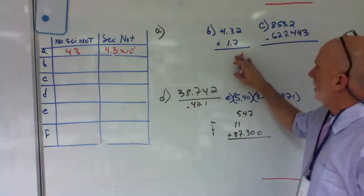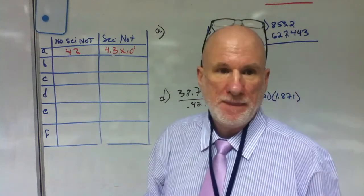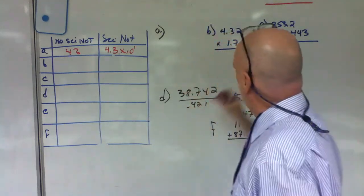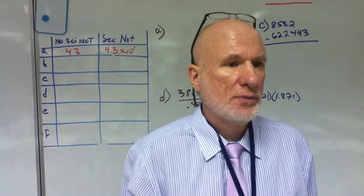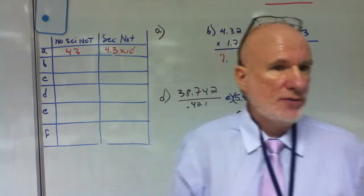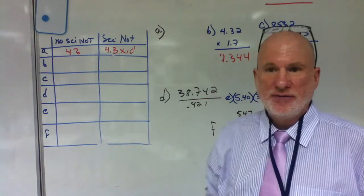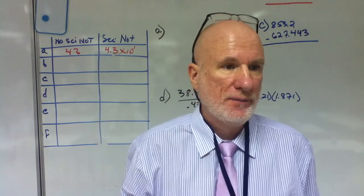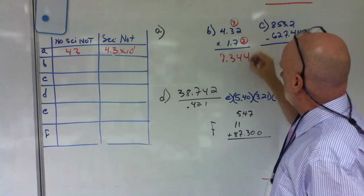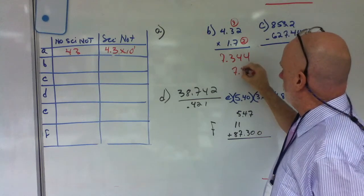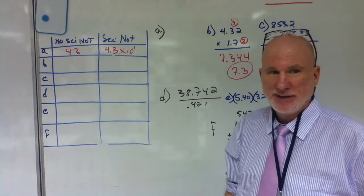Okay, the next one. 4.32 times 1.7. What does that equal? 7.344. How many significant figures can be in my answer? 2. Because I have 3 here, I have 2 here. So I have to have 7.3. Is that clear? All right. Now, interesting.